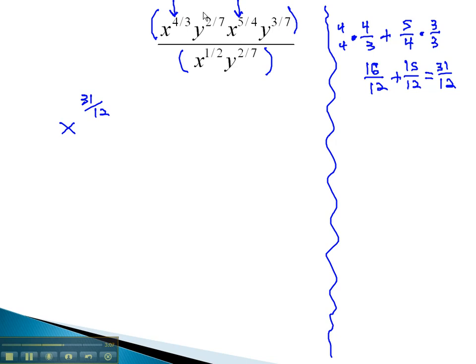Similarly, with the y's, y to the 2/7 and y to the 3/7, we want to add those exponents. Fortunately, we already have a common denominator. 2/7 plus 3/7 is 5/7.